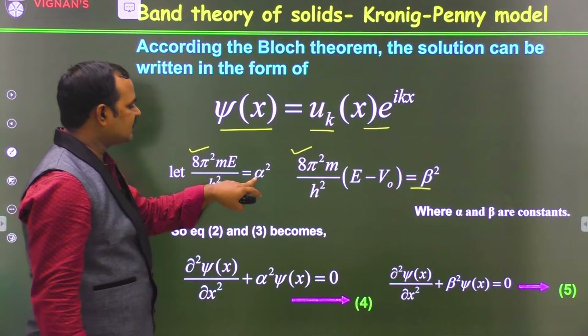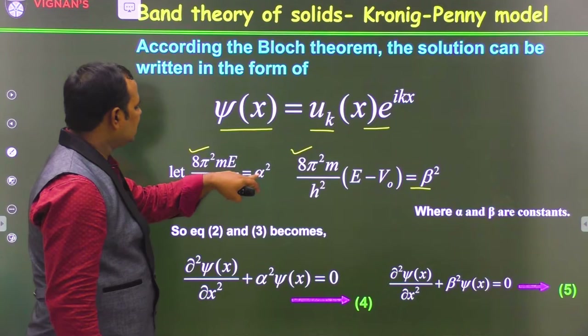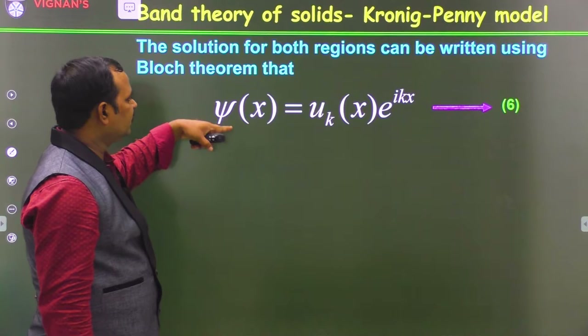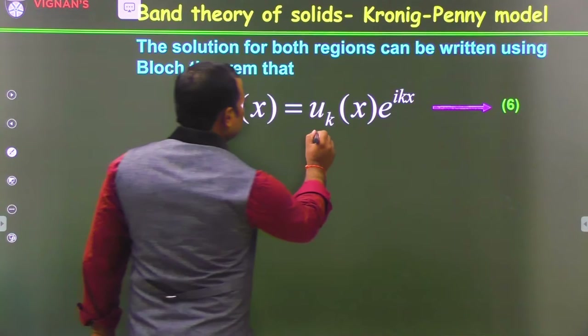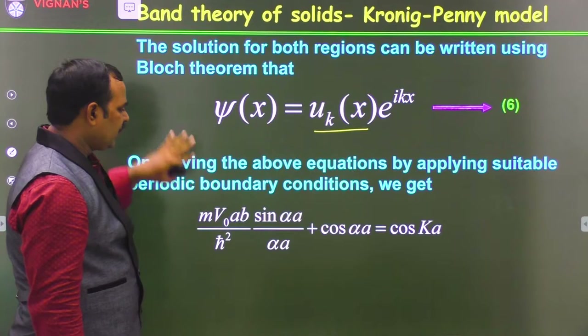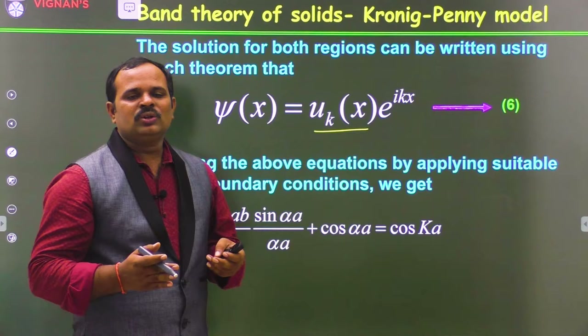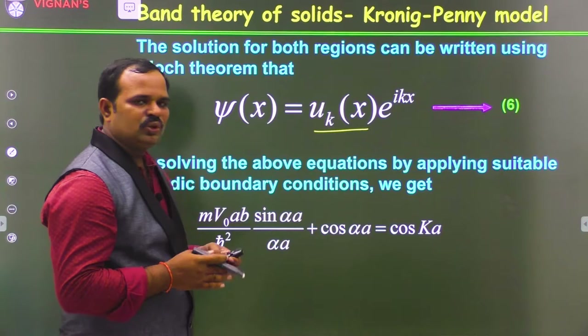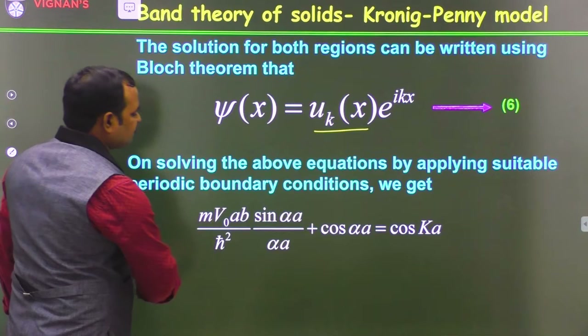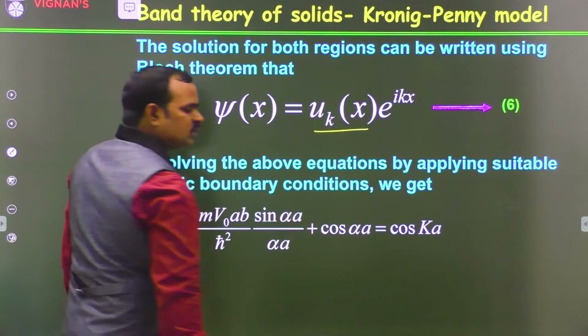The solutions for these equations can be written using the Bloch equation ψ(x) = u_k(x)·e^(ikx). After solving — this is a very lengthy derivation which we will not do here due to syllabus constraints — we get the final equation: P·(sin αa / αa) + cos αa = cos ka, where ħ = h/2π.